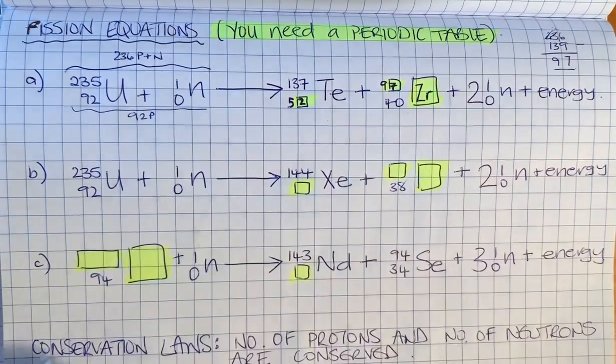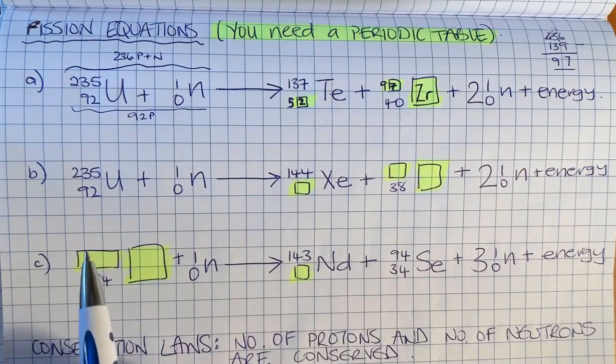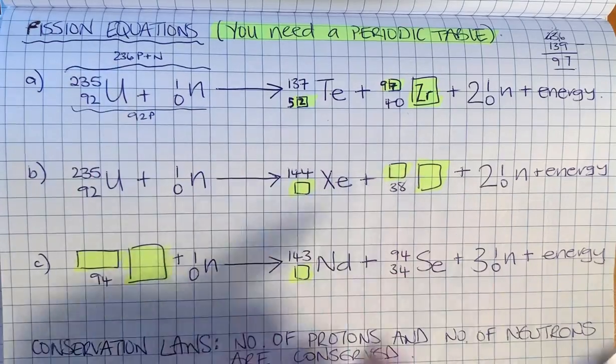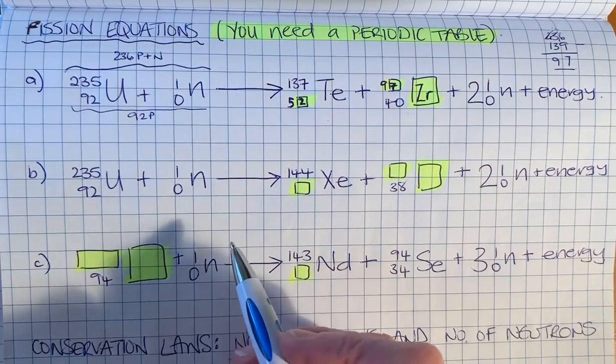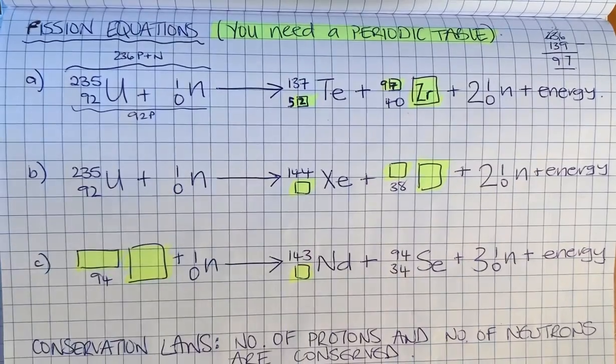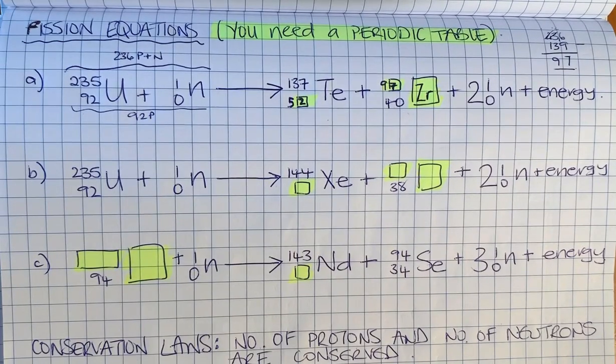We've got tellurium and zirconium there. If you need to find any of these in a test, you'll be given a periodic table. If not, you'll be given everything you need in the question.